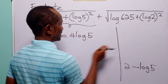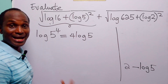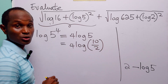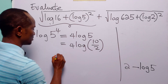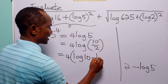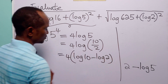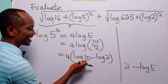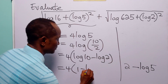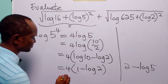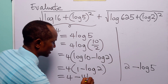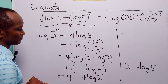Since we have 2 here, let us write 5 as 10 divided by 2. So this is going to be equal to 4 times log(10/2), which equals 4 times (log 10 minus log 2). Once more, log base 10 of 10 is equal to 1, so this is equal to 4 times 1 minus 4 times log 2, giving us 4 minus 4 log 2.